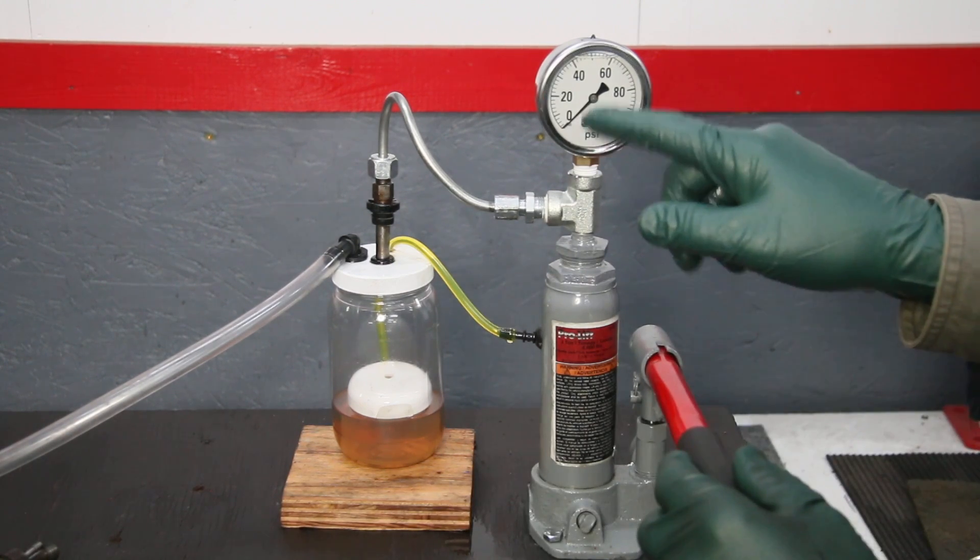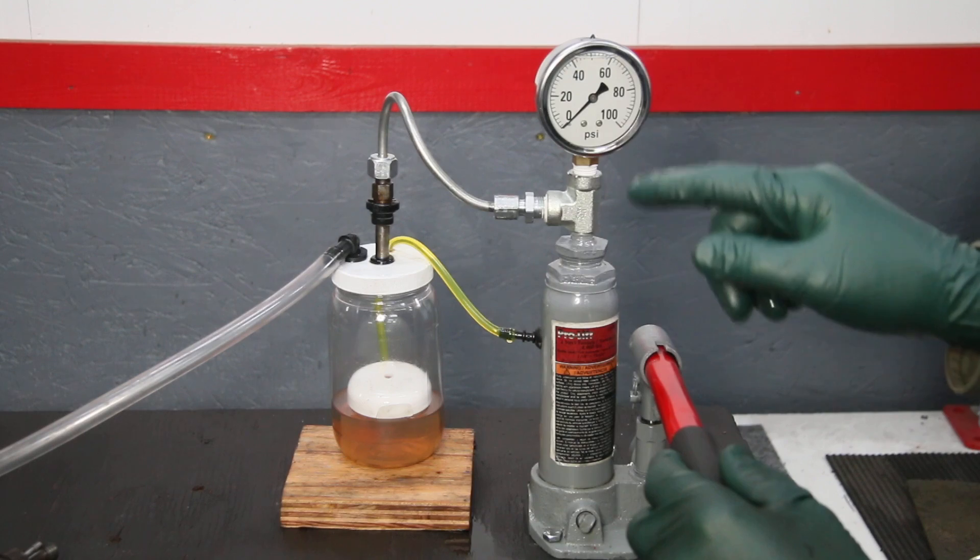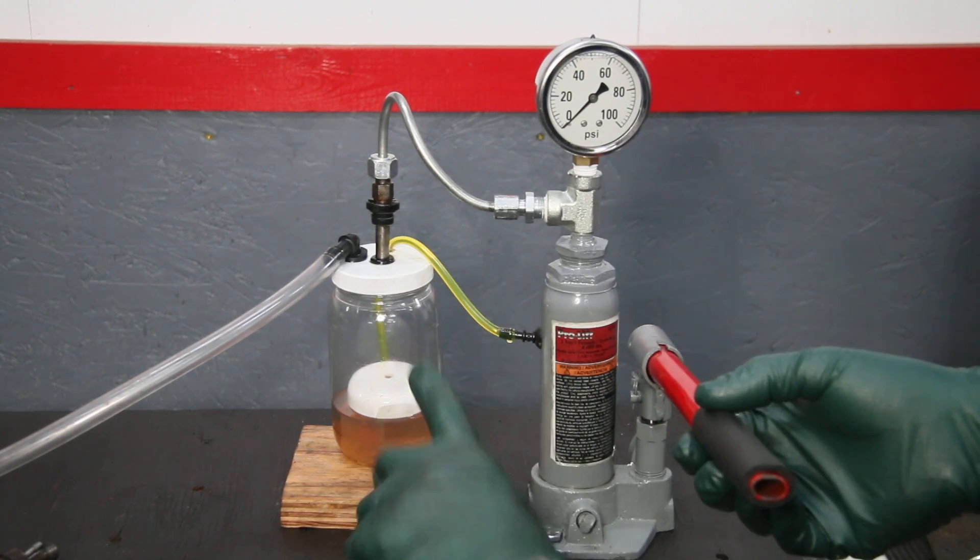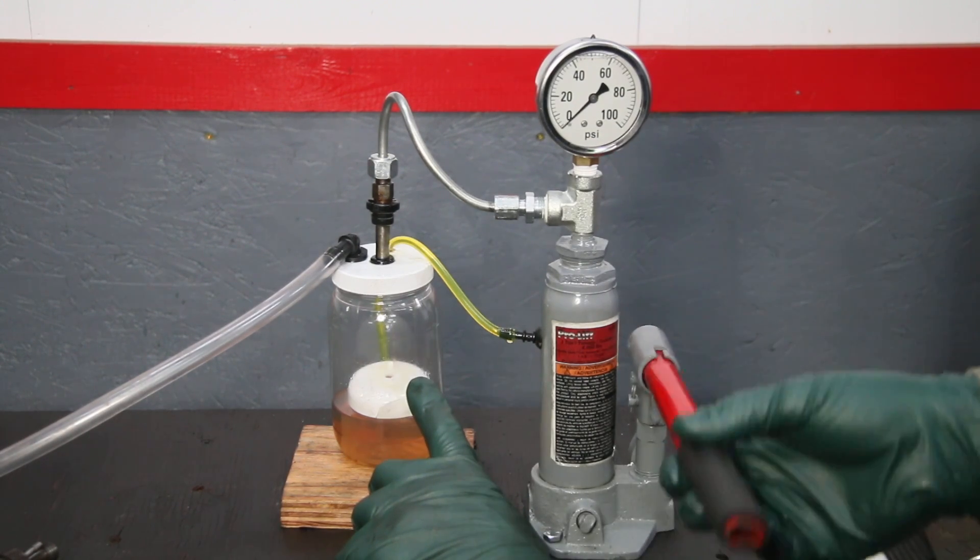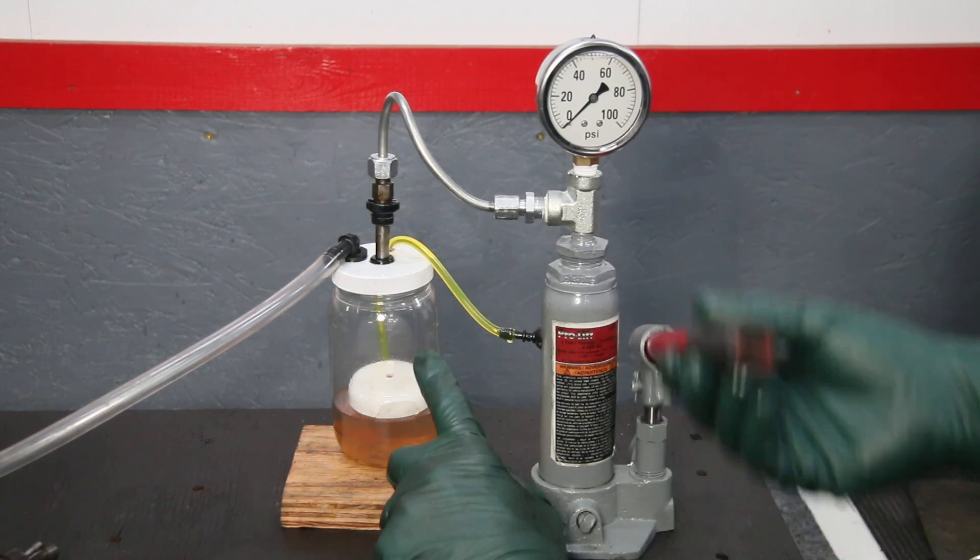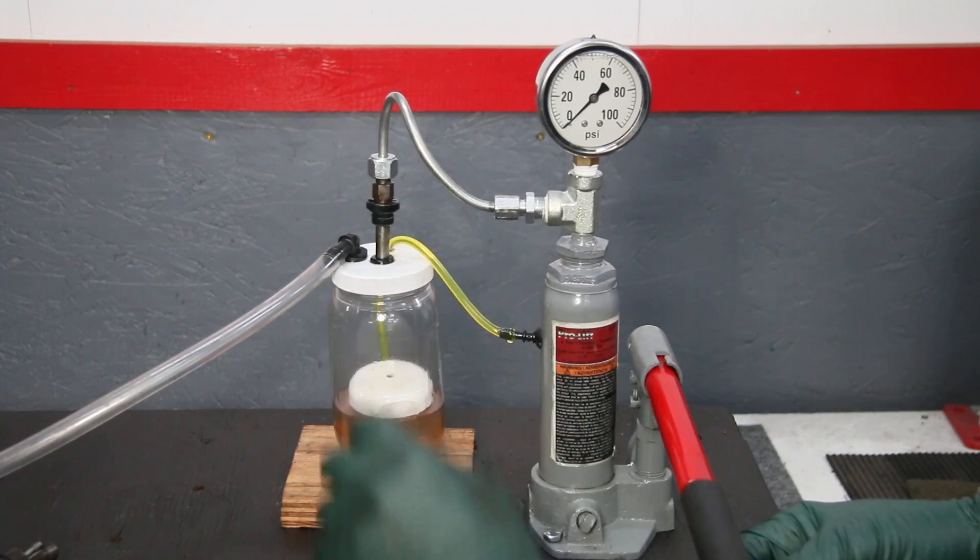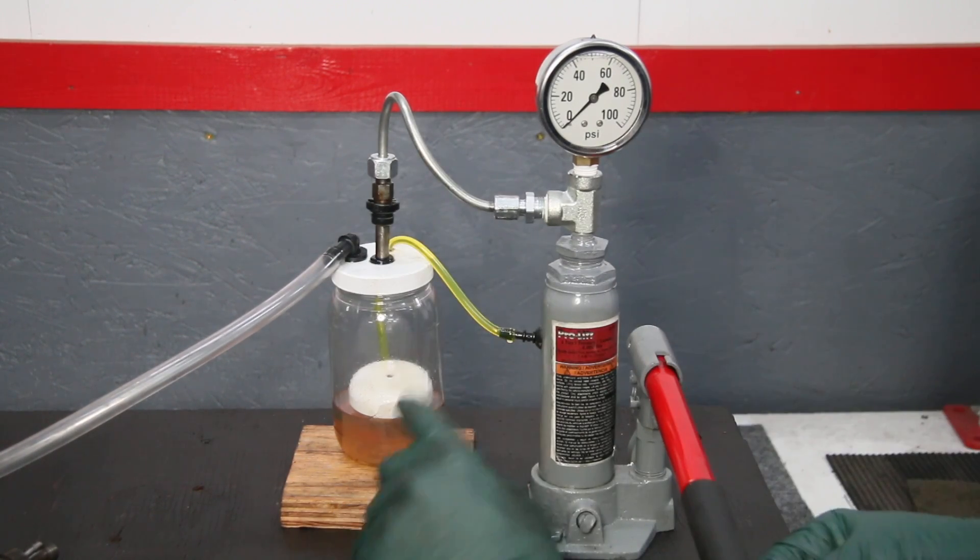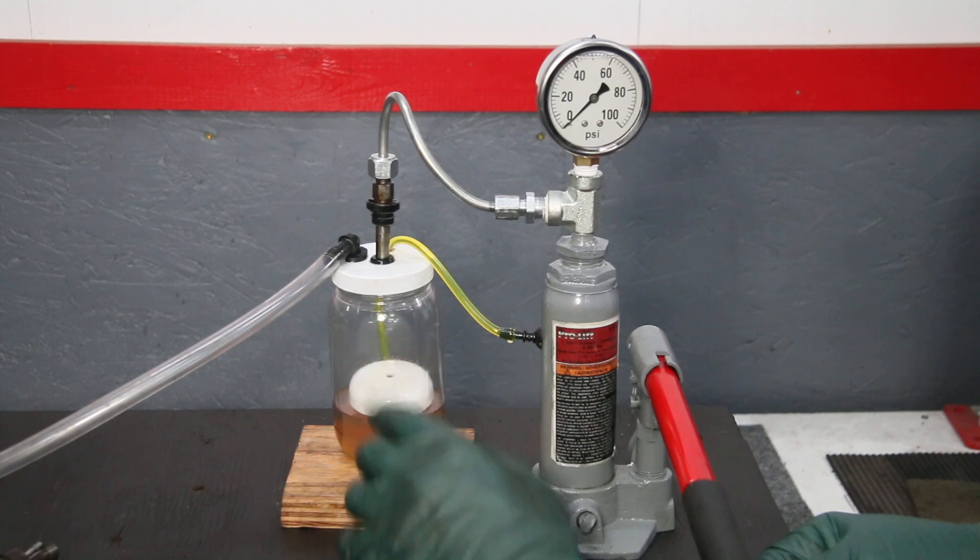So I'm going to look at the 100 psi gauge here and see how far it comes up before it starts to spray. And look at this. It's not even coming up to 10 psi. And look at that. It's just leaking, pouring out, and it's not holding pressure at all. It's dripping.